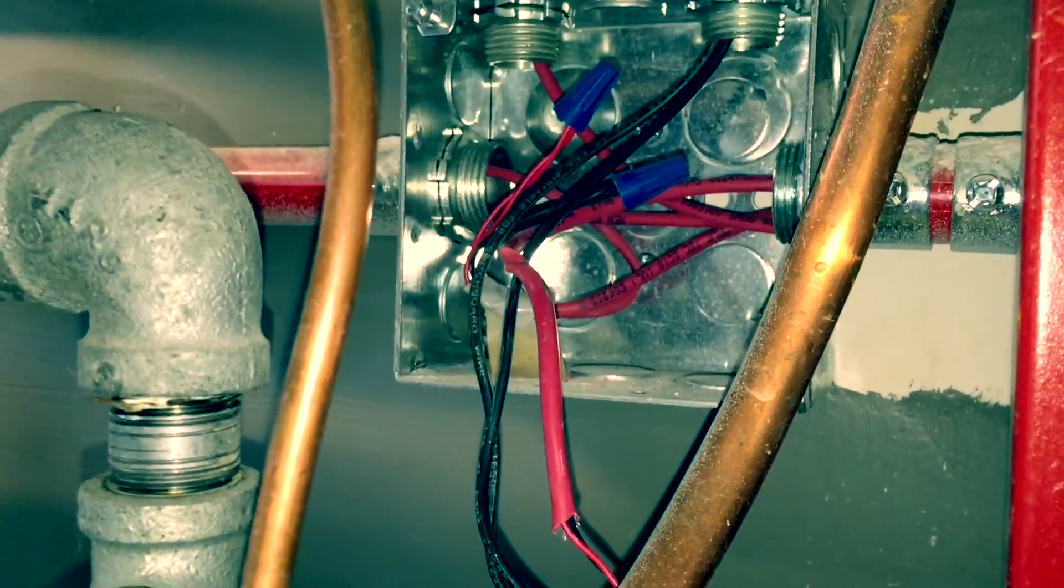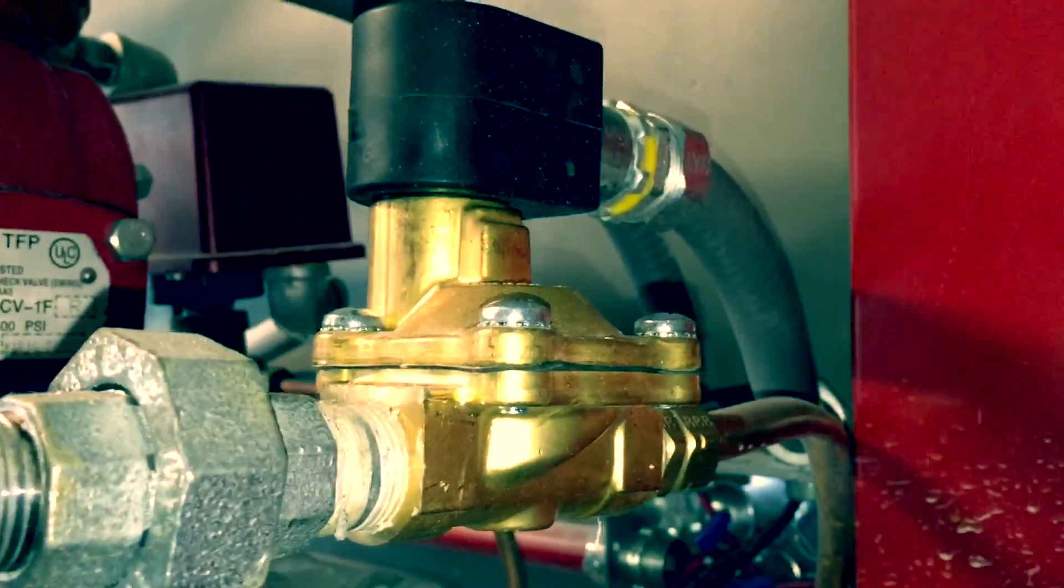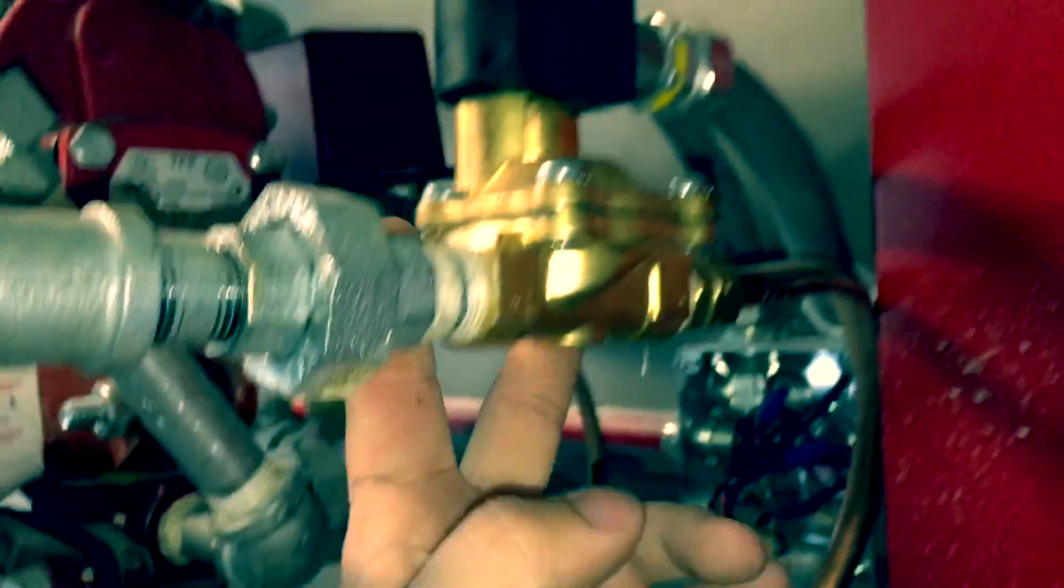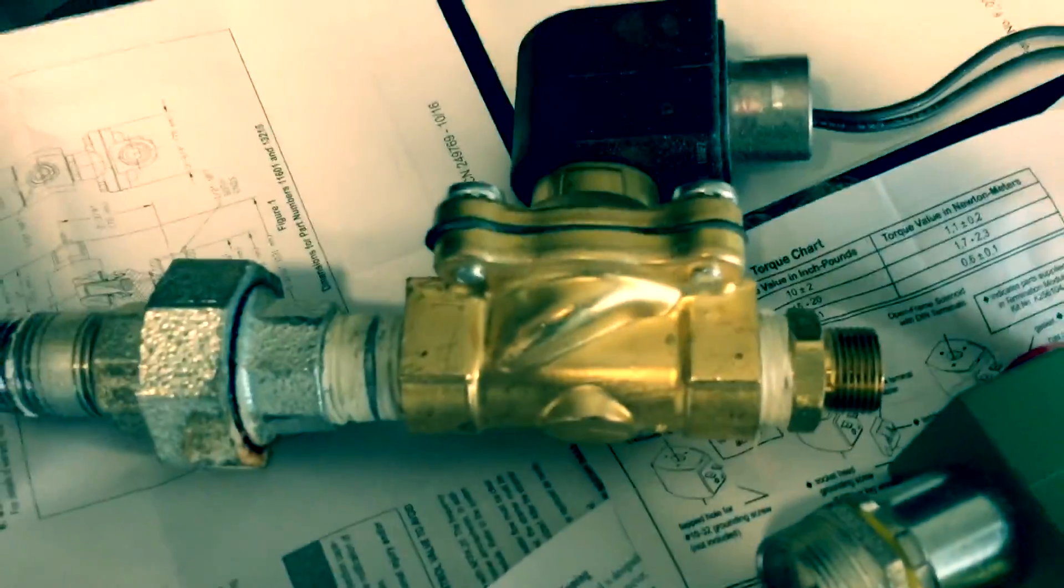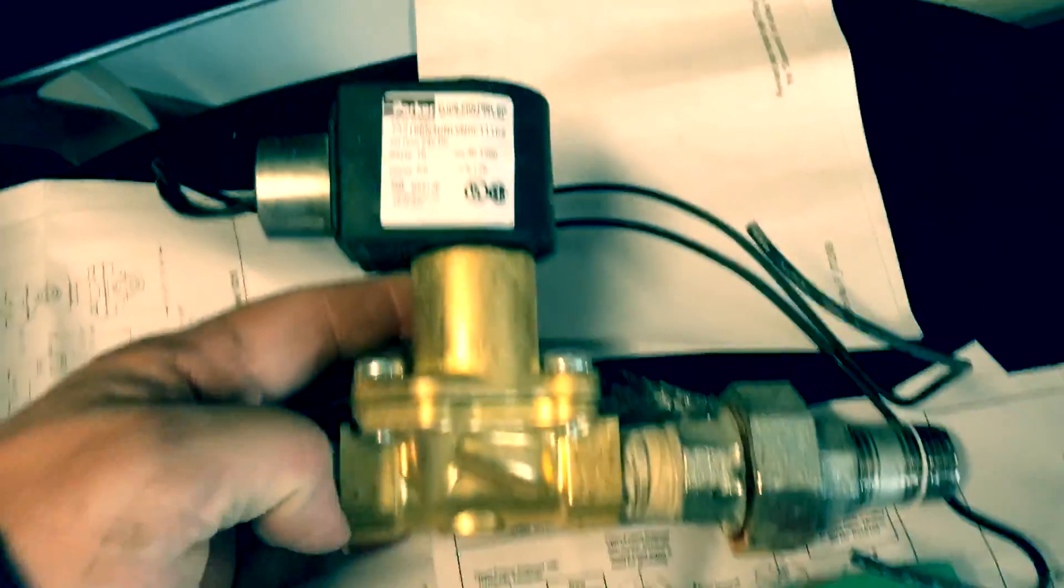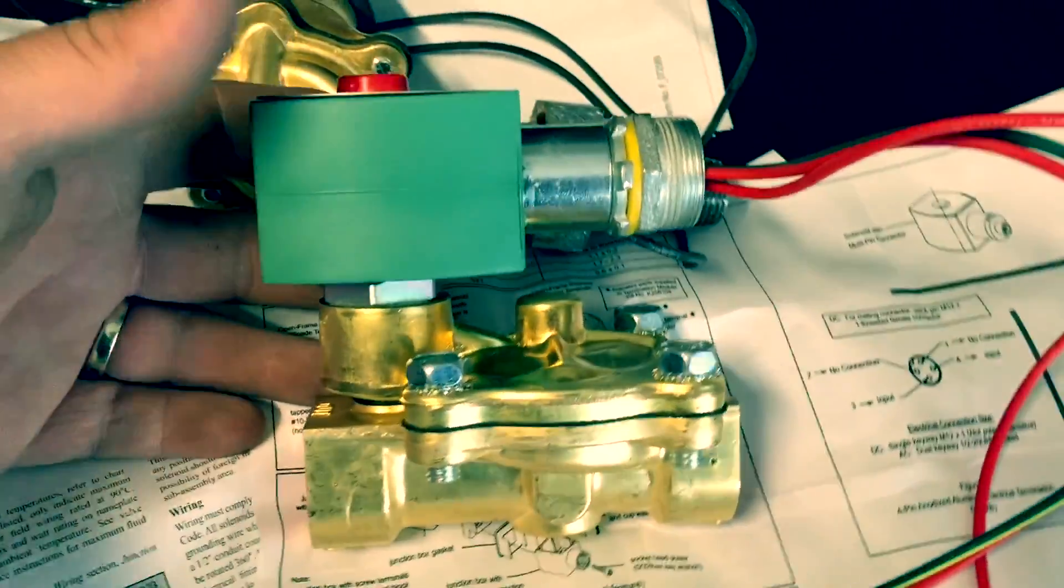We'll disconnect the electrical 24V to the solenoid actuator and then once we do that we will replace it and wire it back up and test it. Here's the old one, solenoid actuator came off the Tyco valve. Here's the new one that we're going to put on there. It's normally closed, when power is sent to it, it opens up.